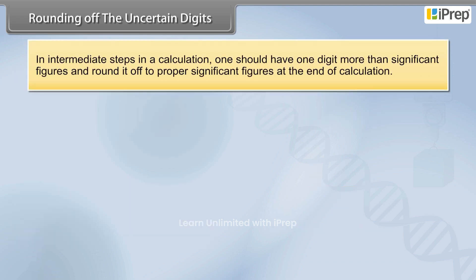In the intermediate steps in a calculation, one should have one digit more than significant figures and round it off to proper significant figures at the end of calculation.